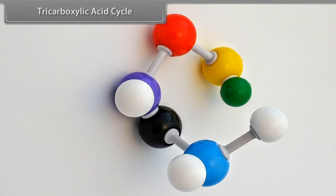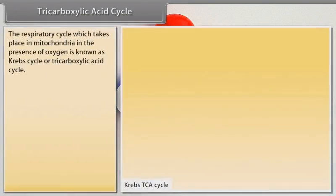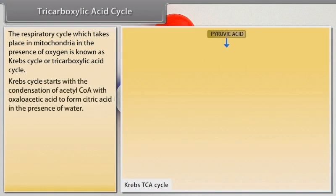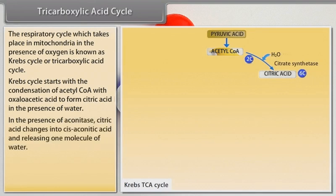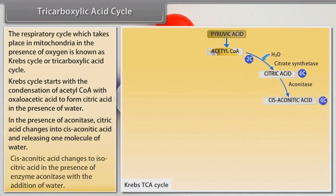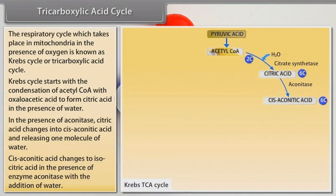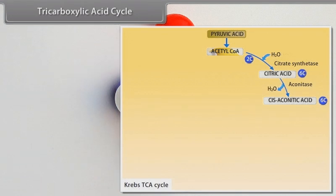The tricarboxylic acid cycle (TCA cycle), also known as the Krebs cycle, takes place in mitochondria in the presence of oxygen. The Krebs cycle starts with the condensation of acetyl CoA with oxaloacetic acid to form citric acid in the presence of water. In the presence of aconitase, citric acid changes into cis-aconitic acid and releases one molecule of water. Cis-aconitic acid changes to isocitric acid in the presence of enzyme aconitase with the addition of water.